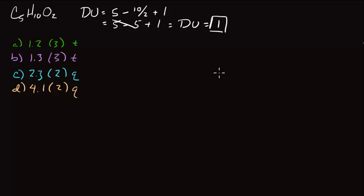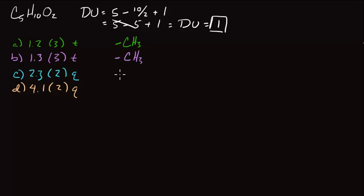Now let's try to figure out the most probable structure for each peak. Peak A integrates to three protons, so the most likely structure is a methyl group. Peak B also shows an integration of three, so it's more than likely going to be represented by a second CH3 group. Peak C integrates to two, so we're probably looking at a methylene group. Peak D also shows an integration of two, so we have yet another CH2.